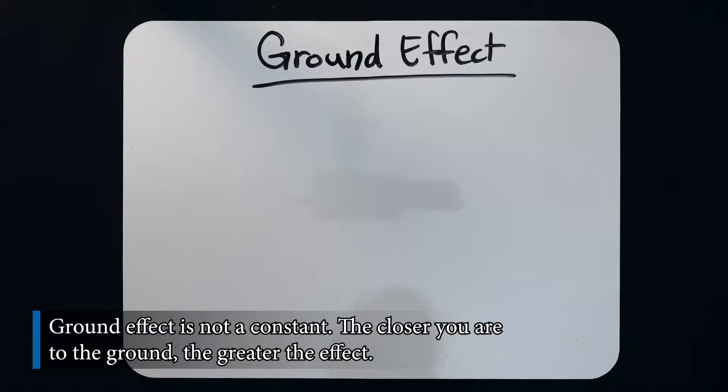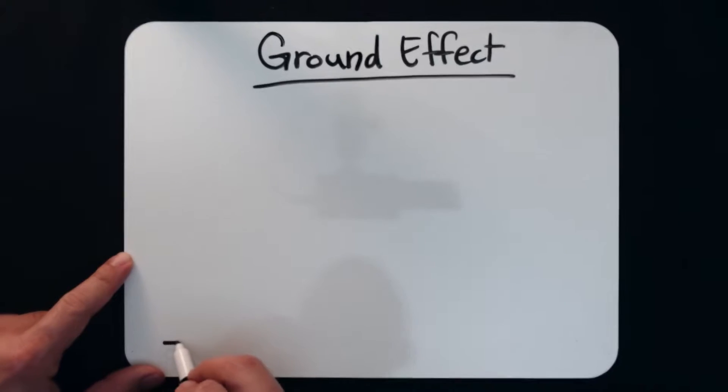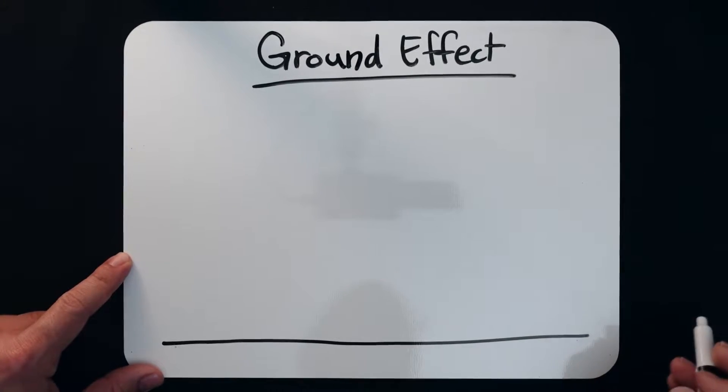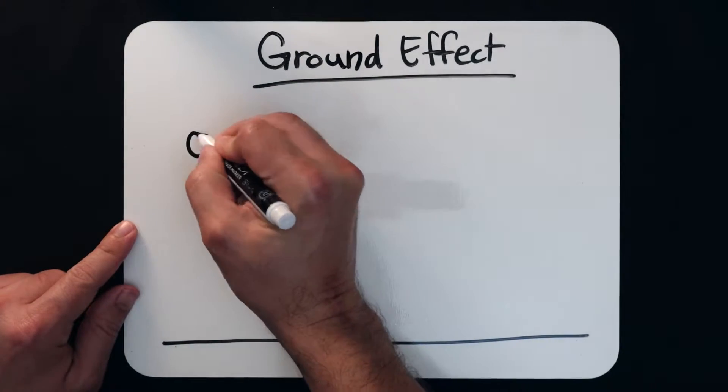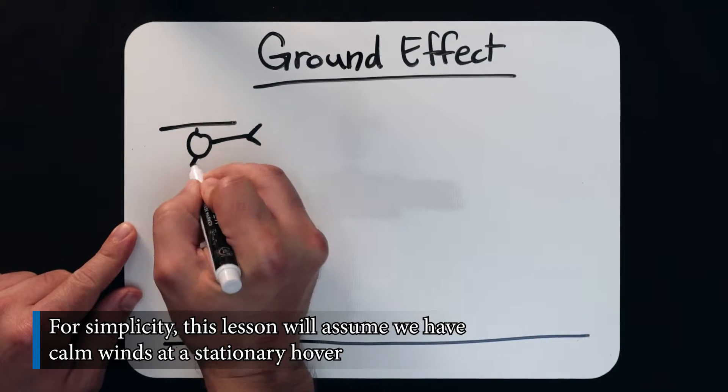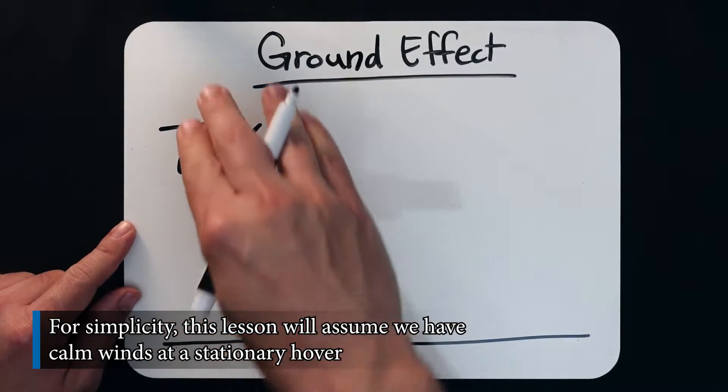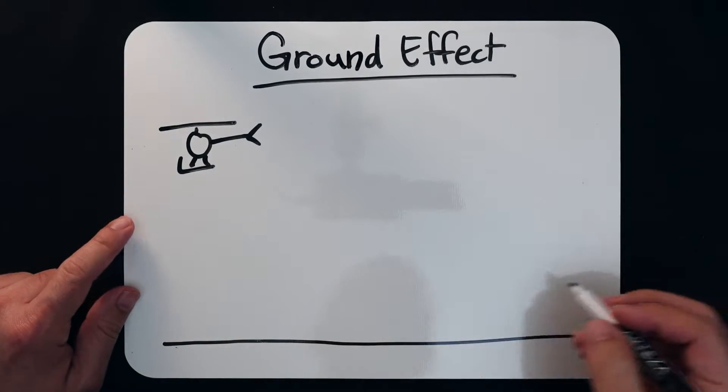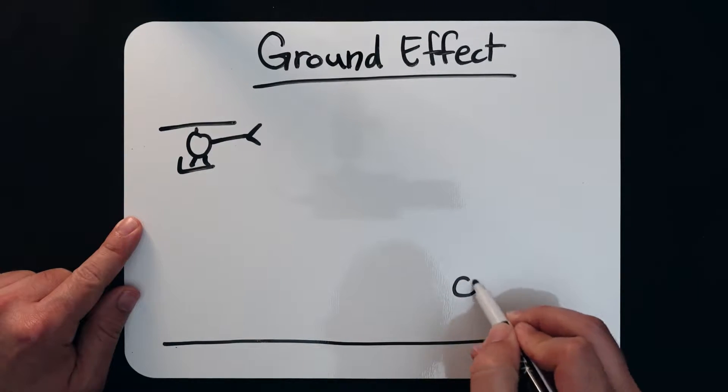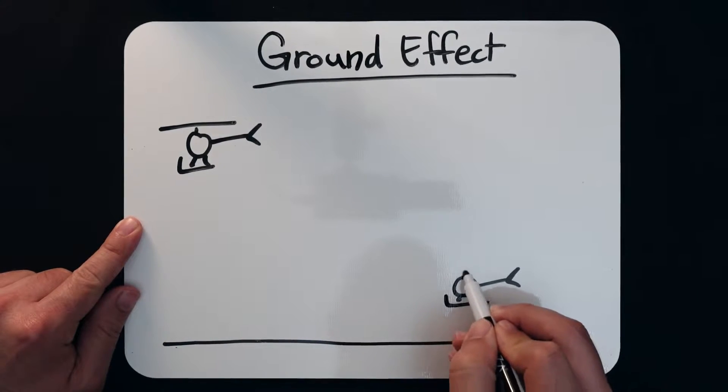Now what does that look like and why does it work? So we are talking about ground effect, so I'm going to start by drawing the ground. We're going to draw one helicopter here. This helicopter is out of ground effect. We're going to draw one helicopter here that is in ground effect.